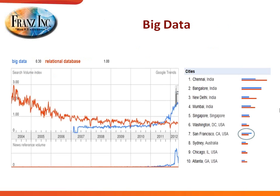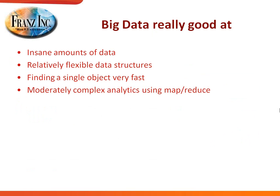Everyone knows now that big data is far more popular to talk about than relational databases. This is a picture from Google Trends. We at Franz live in the Bay Area, and what you see here is that we're about the one place in the world where people talk more about big data than about relational databases. Big data is really, really good at insane amounts of data. It is more flexible than a relational database, so you can work with relatively flexible data structures. If you want to add some new columns on the fly, you don't have to rebuild the whole database. Big data is also good at finding a single object very fast and doing moderately complex analytics using MapReduce.